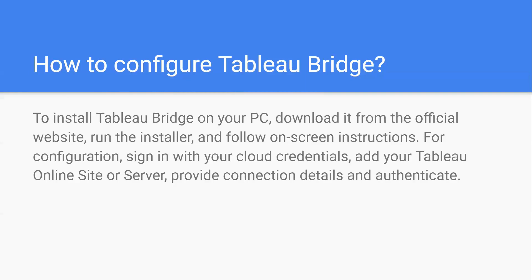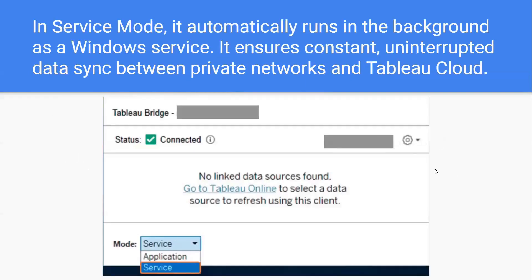I have some screenshots as well. This is how the application will look like. Right now I don't have access to this particular client's network, so I'm just showing some screenshots. After connecting, the status will say connected. Here we will be seeing the server name, and as you can see right now, we don't have any data sources available, so it is saying no linked data sources found. But once we have connected Tableau Bridge and Tableau Server, all the related data sources will come up here and we can also schedule some refreshes from here.